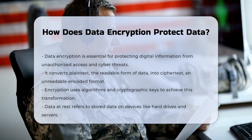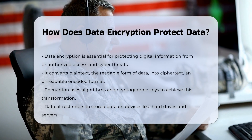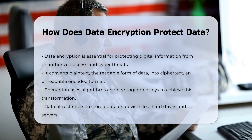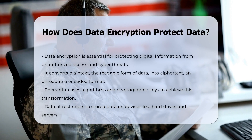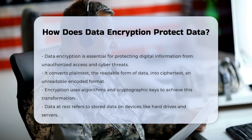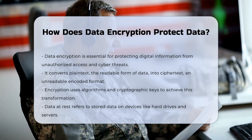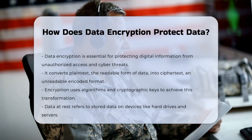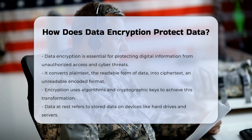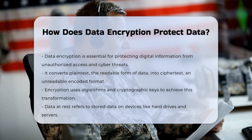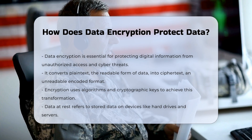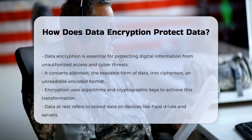Here's a detailed look at how it works. Data encryption translates plain text, which is the original readable form of data, into cipher text, an unreadable and encoded format. This process is achieved through the use of encryption algorithms and cryptographic keys.